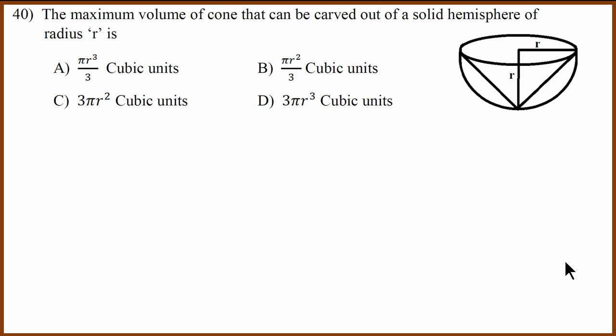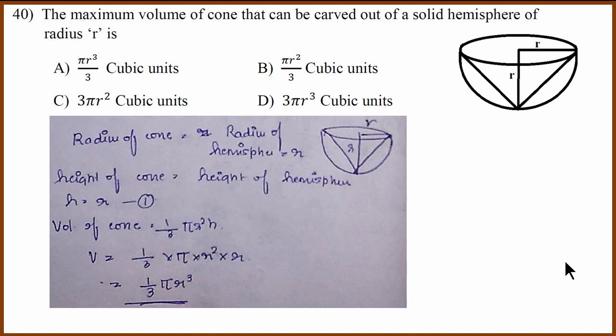Final question. This is an interesting question. So they've asked us to find the volume of a cone. How do you find the volume of a cone? In this case, the radius of the cone is given as same as hemisphere. So that is r. The height of the cone is given as r because that's a maximum you can fit. The volume is pi r cube by 3. So correct answer is A.